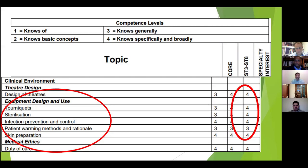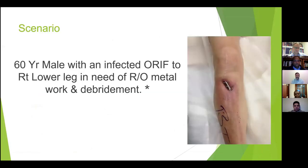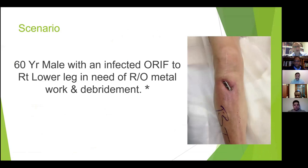This is an important aspect of the curriculum and we are expected to know up to level four of it. Without further ado, this is the scenario we will start with. Abdullah is a 60-year-old gentleman with an open wound with an infected open reduction of the right fibula and tibia. He needs removal of metalwork and debridement, and you've done the procedure and found a significant bone defect.